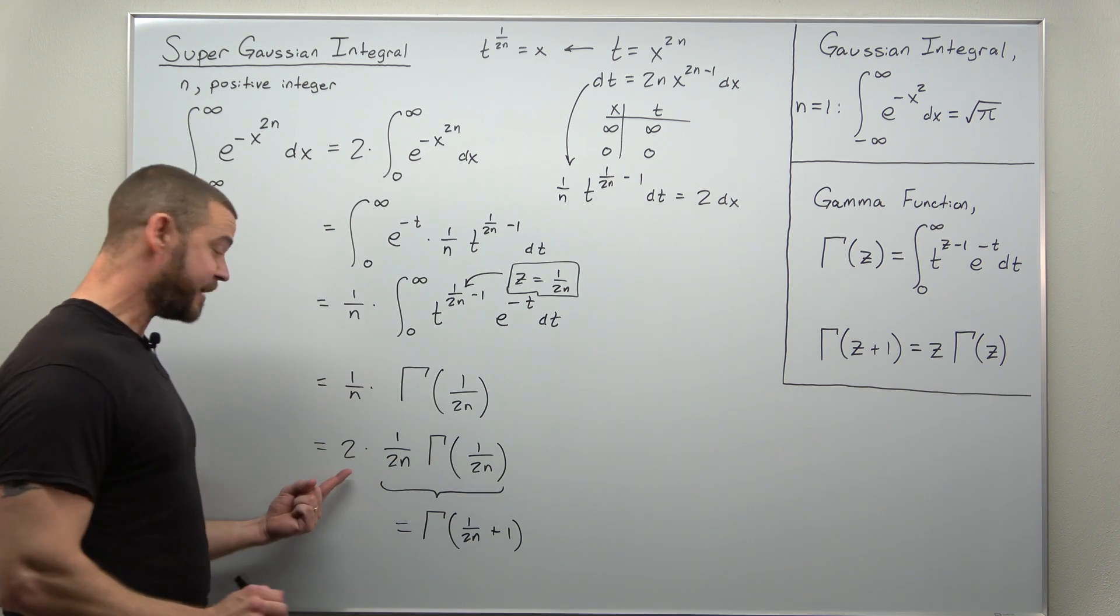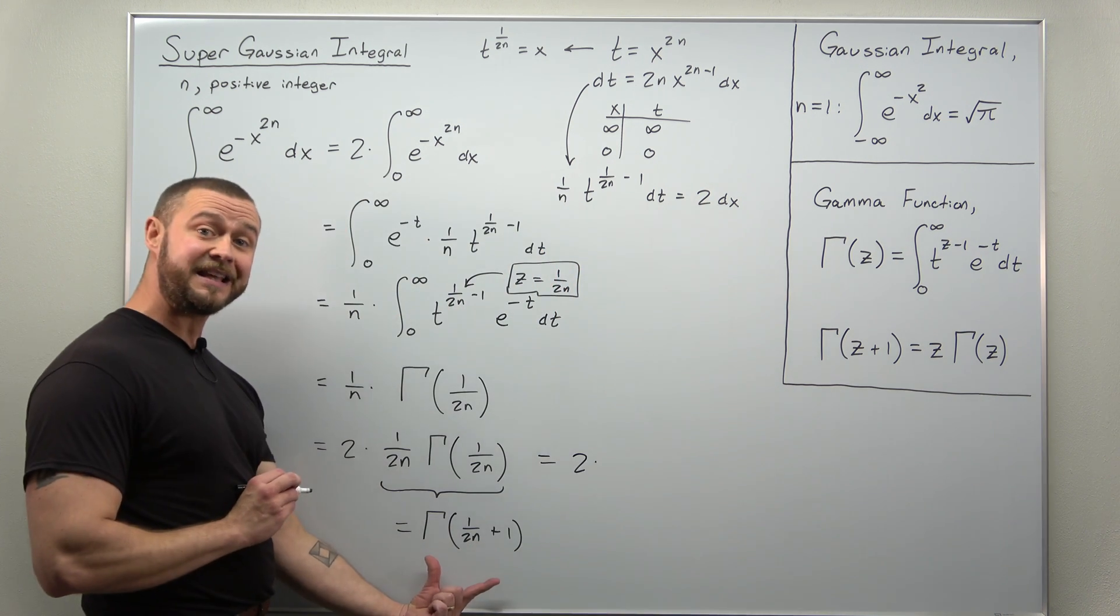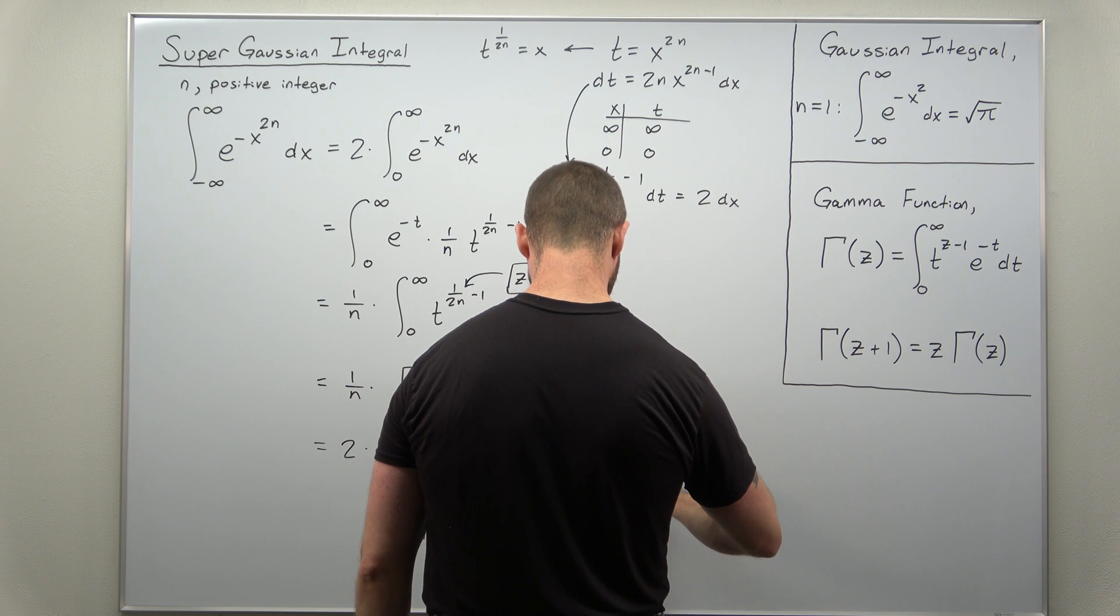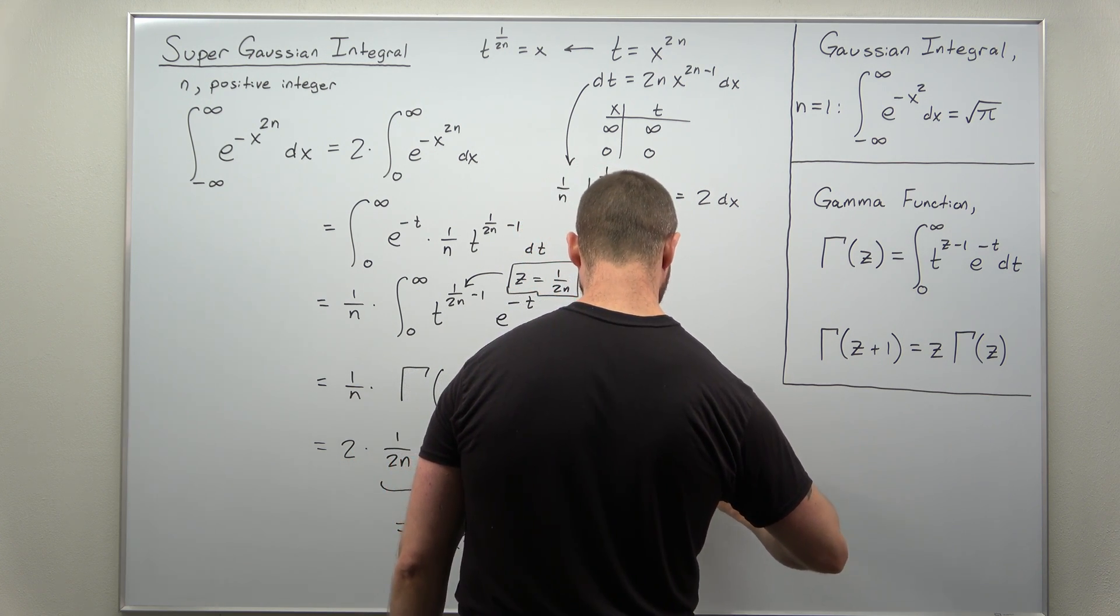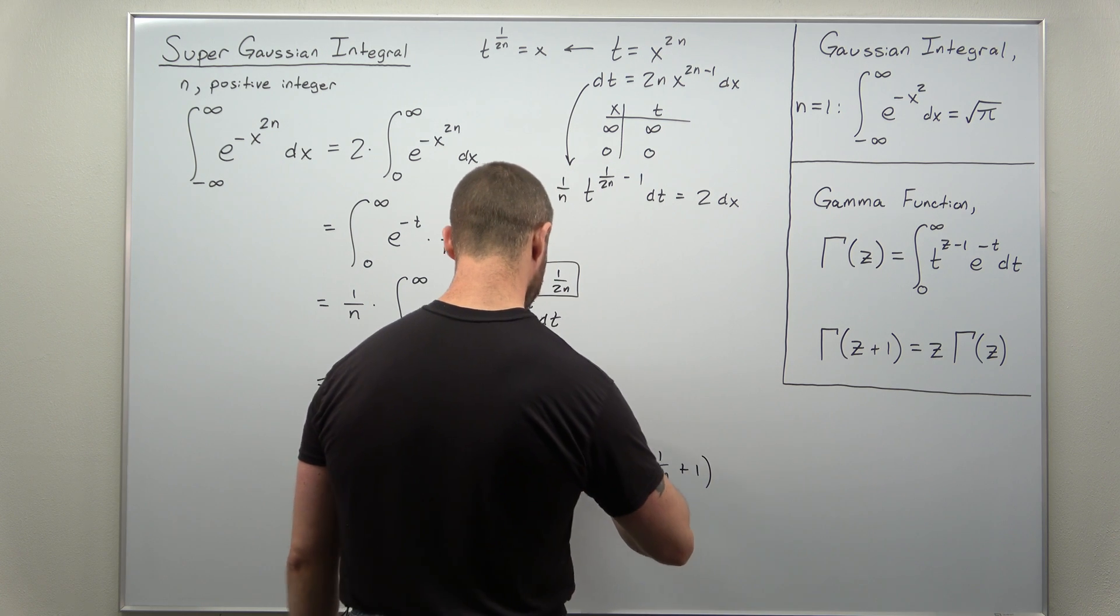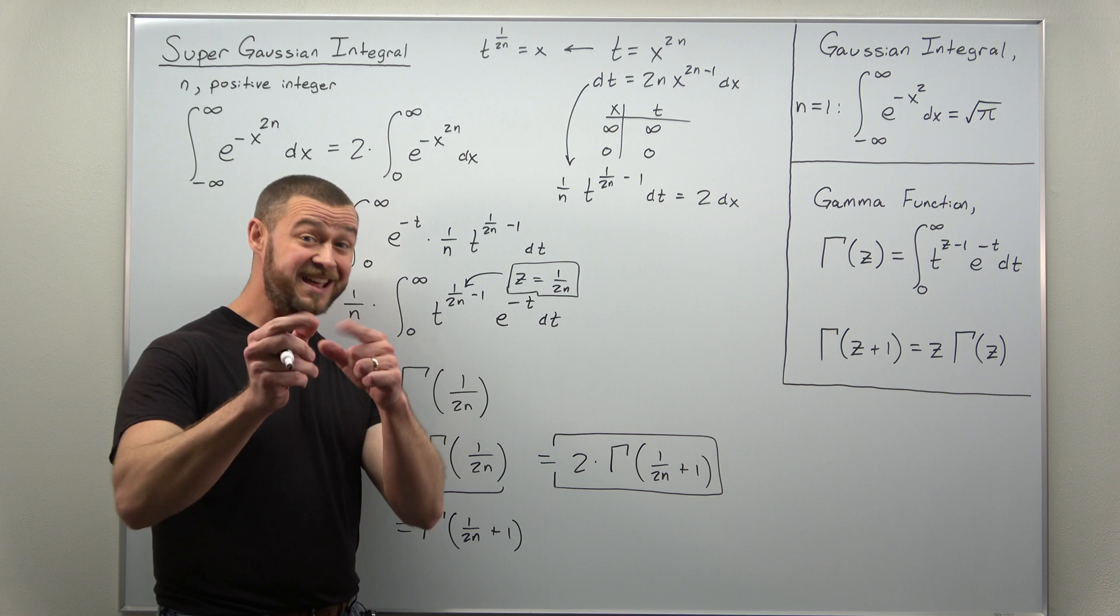And that's it. We have our factor of 2. And that's now multiplying the gamma function of 1 divided by 2n plus 1. And that is it.